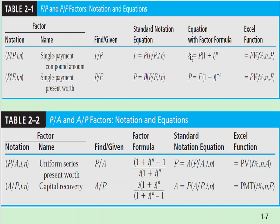If I want to go from the present to the future, I'm looking for F. I can use the formula, or I can use factor notation written as F = P × (F/P, i, n). This notation means: give me n and i and P, and I can get F. You can also solve these using an Excel sheet.